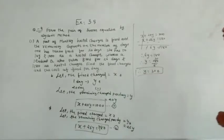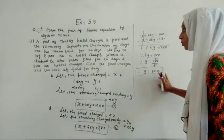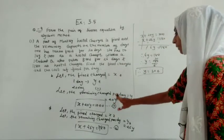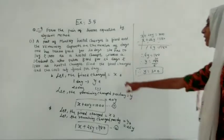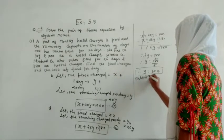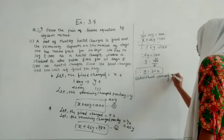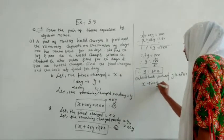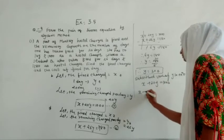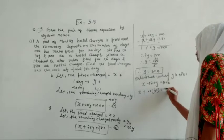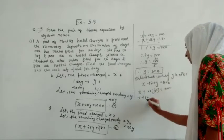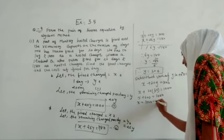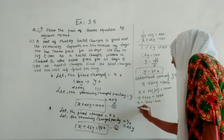Now Y equals 30. If we are eating for 20 days, 20 into 30 means we pay 600 rupees for food. But we still need to find X. Substituting Y equals 30 into equation 1: X plus 20 into 30 equals 1000, so X plus 600 equals 1000, which gives X equals 400.